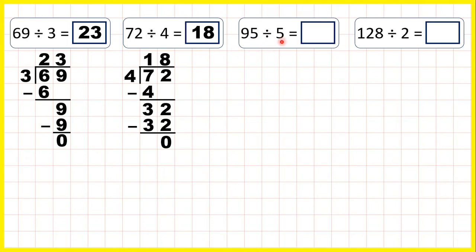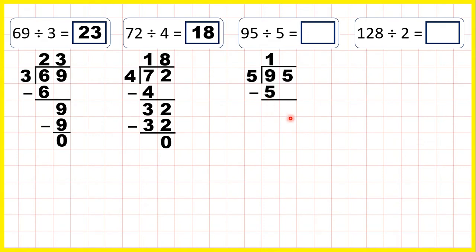95 divided by 5. The first digit is a 9, and the closest number to 9 that's in the 5 times table but which is still less than 9 is 5. And that's 1 times 5, so 1 goes in our answer line. Now we subtract and bring down. 9 minus 5 is 4, and we bring down the 5, so we have 45 divided by 5.